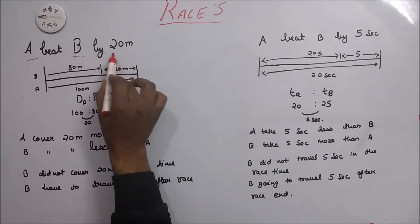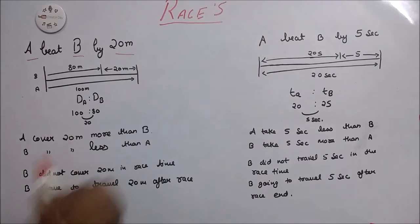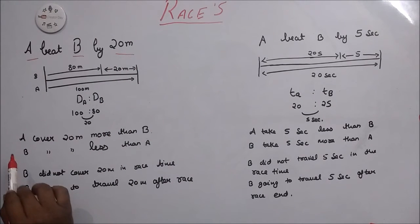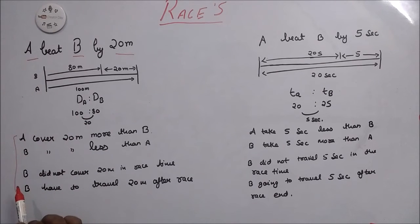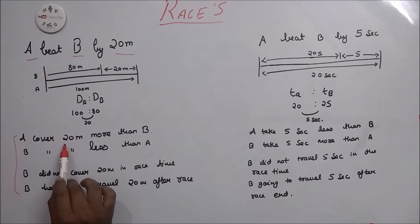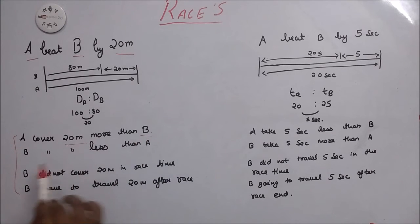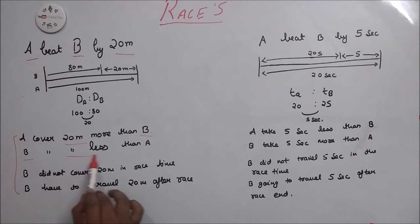A beat B by 20m in a 100m race. There are four conclusions for this statement. A covers 20m more than B. B covers 20m less than A. B did not cover 20m in race time. B has to travel 20m after the race.